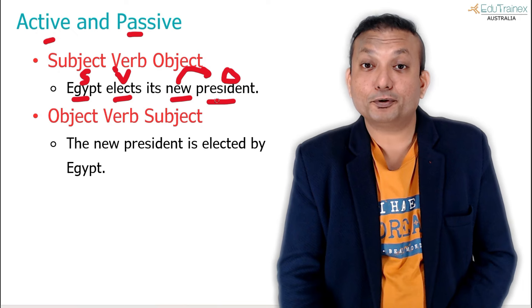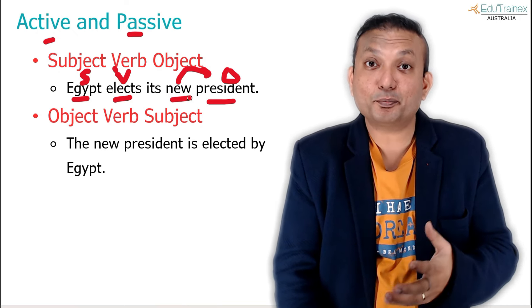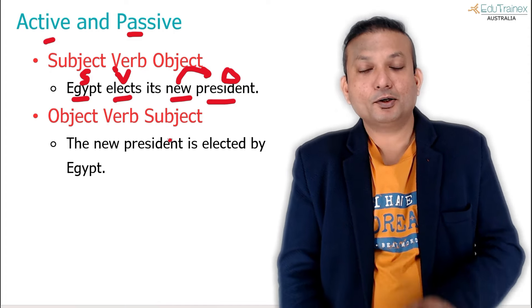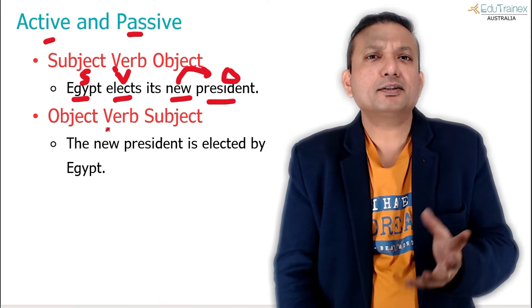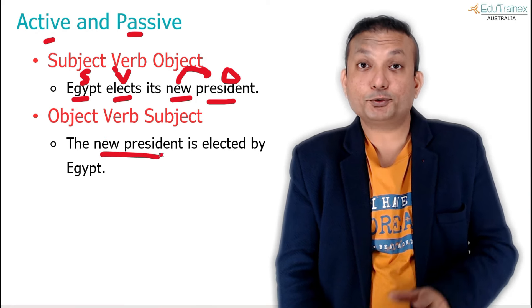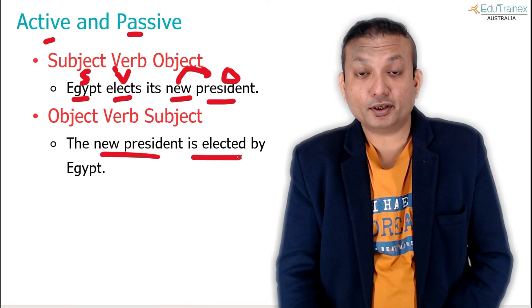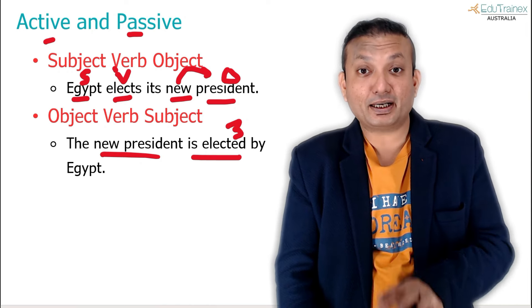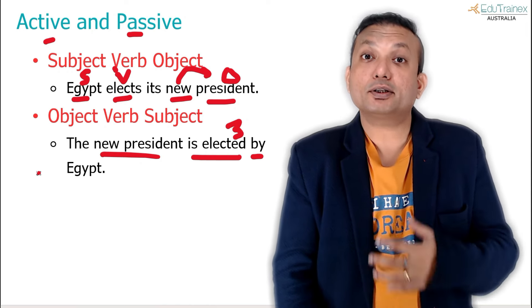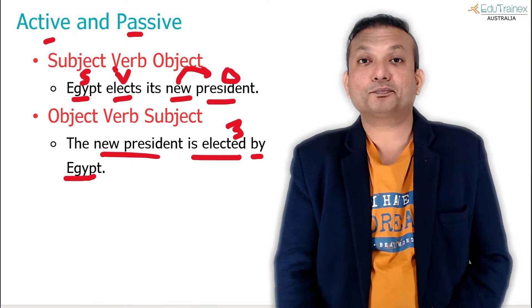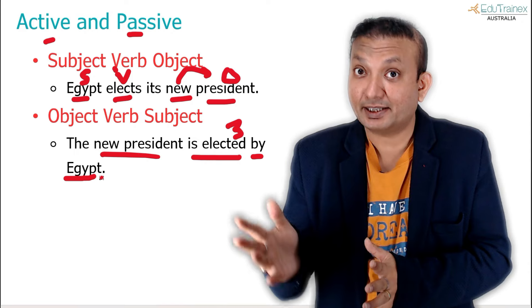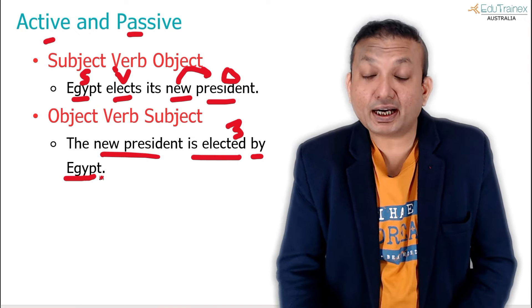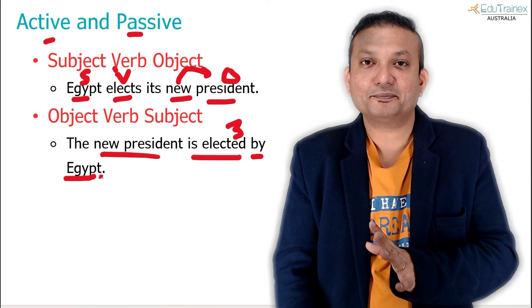After nouns you see verbs; before nouns you see adjectives. These are the grammar patterns. In the passive voice, things change slightly — the object comes first, so 'the new president' moves to the beginning. The verb will always be in verb-3 form — 'elected' — and most of the time it's followed by 'by' to show the subject. For example: 'The experiment was conducted by the scientists.' The subject comes at the end.